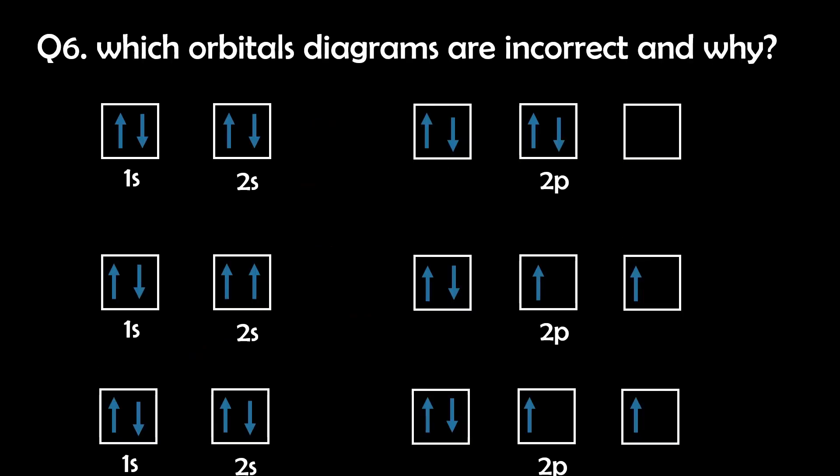Question 6. Which orbital diagrams are incorrect and why? The first and second orbital diagrams are incorrect. The first diagram is not filling the unoccupied orbitals before pairing. And this violates Hund's rule.